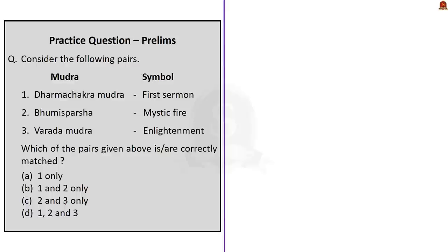Practice prelims question 2: Match the mudras with their symbols — Dharma Chakra Mudra with first sermon; Bhumisparsha with mystic fire; Varada Mudra with enlightenment. The correct answer is Option A: one only. Only Dharma Chakra Mudra is correctly matched — it symbolizes the first sermon. Bhumisparsha Mudra symbolizes enlightenment (not mystic fire), and Varada Mudra symbolizes charity, compassion and boon granting (not enlightenment). Mains practice questions are displayed; write your answer and post in the comment section.